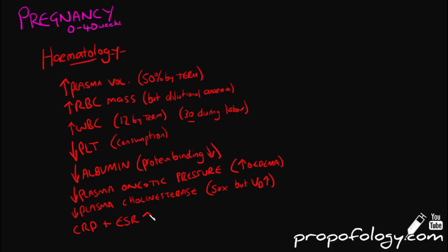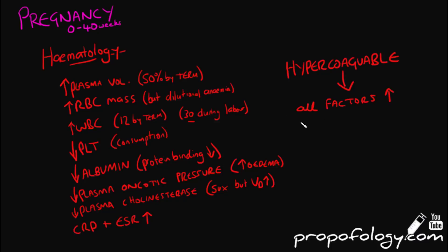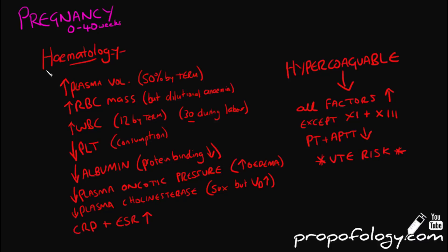One of the most important haematological changes during pregnancy is that the woman is hypercoagulable. All clotting factors will increase except factor 11 and factor 13. You'll see a PT and APTT shortening, but there's a high risk of thromboembolic complications, and VTE prophylaxis must be considered in these ladies in hospital.